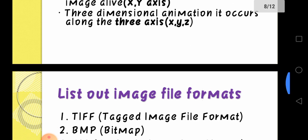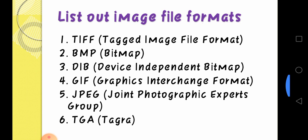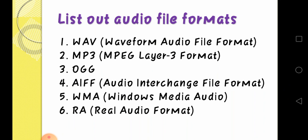Next, image file formats: TIFF, BMP, GIF, JPEG, TGA. Next, list the audio file formats. Audio file formats are: WAV, MP3, OGG, AIFF, WMA, RA.